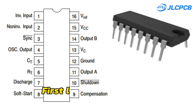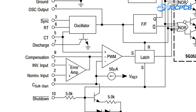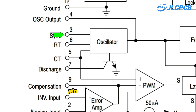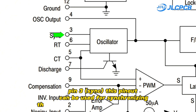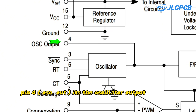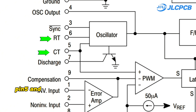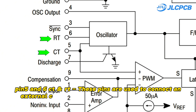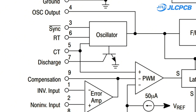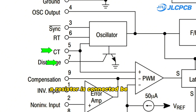Let's get started. First, let's know about the pin connection of the SG3525 IC. Pin 1 is the inverting input. Pin 2 is the non-inverting input. Pin 3 can be used for synchronizing the IC with an external oscillator. Pin 4 is the oscillator output; the frequency of the IC may be configured at this pin. Pins 5 and 6 are used to connect an external capacitor and resistor respectively to set up the frequency of the oscillator circuit.